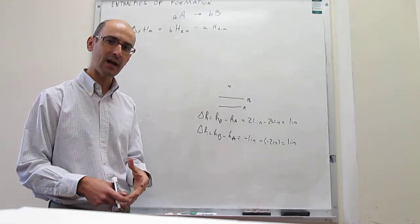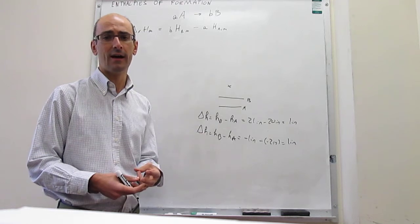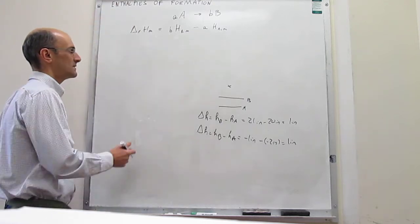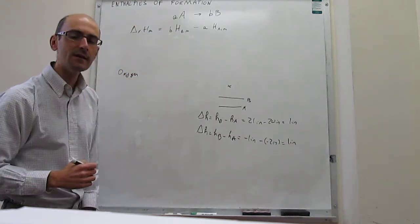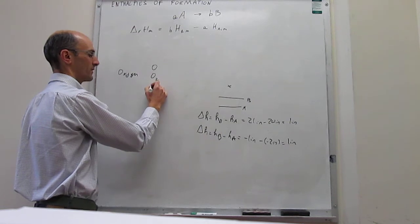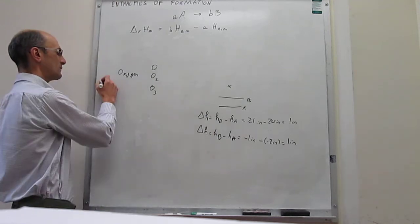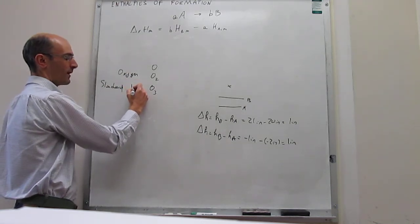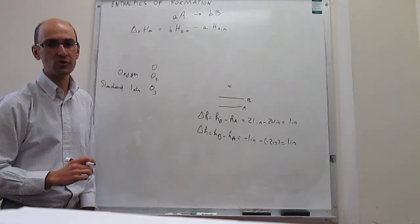The way that chemists have agreed on for a zero is something called the most stable allotropes of elements in their standard state. For example, oxygen comes in many forms: atoms of oxygen, molecular oxygen, and ozone — these are allotropes of oxygen. Under standard conditions, which is pure substances at one bar of pressure and a temperature of interest (generally room temperature), only one of these is going to be the most stable. It turns out that it's going to be oxygen gas — molecular O2 — that is the most stable.